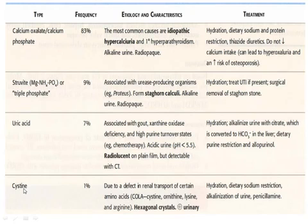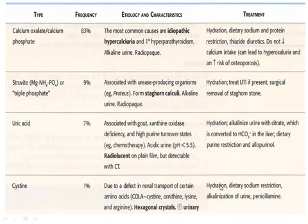The fourth type is cystine stones, accounting for 1%, due to a defect in renal transport of certain amino acids. Remember the mnemonic COLA: Cystine, Ornithine, Lysine, Arginine. These form hexagonal crystals and are positive on urinary testing. Treatment includes hydration, dietary sodium restriction, and alkalinizing the urine, similar to uric acid stones.